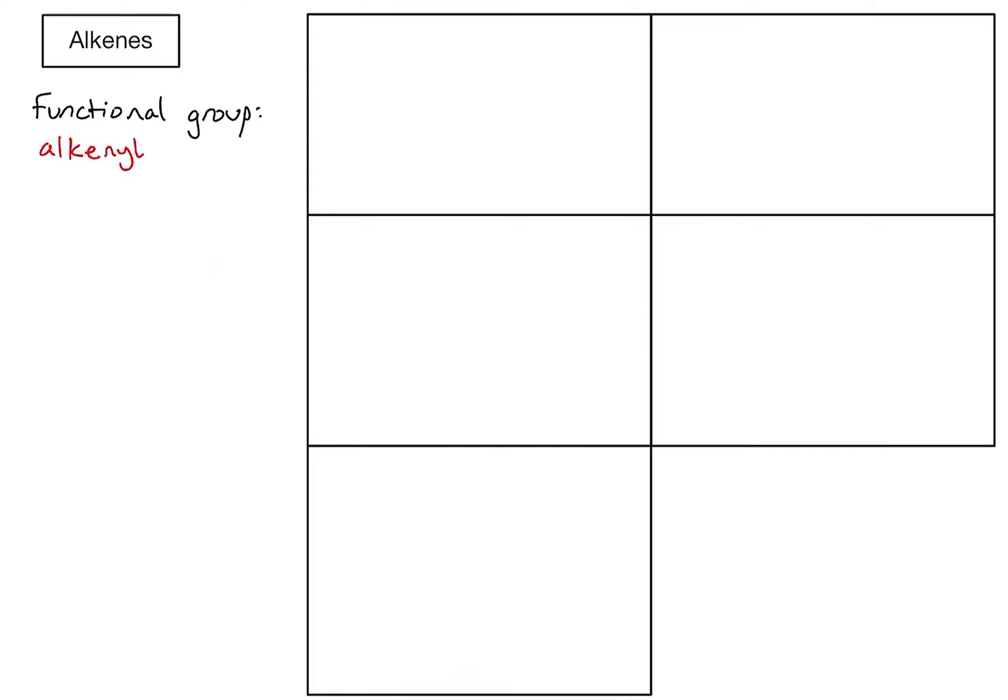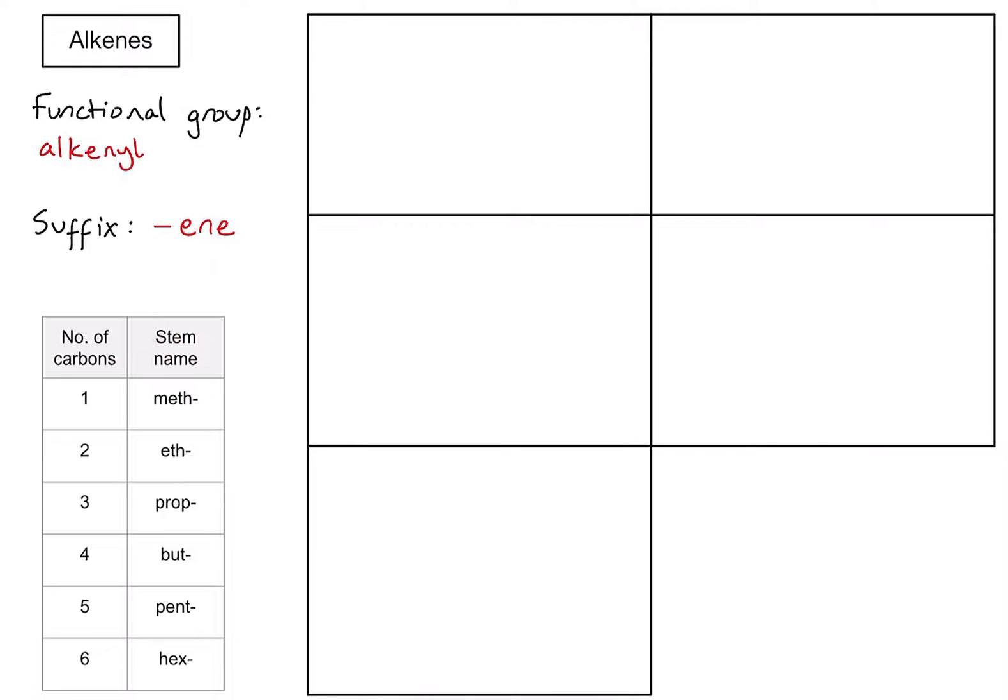And how do we name these? Well, the key thing to know here is that the end of the name of alkenes is going to be "-ene". Suffix just means the end part of the name. And for reference, let's include how we find out the stem name in our alkenes related to the number of carbons in the main chain, which gives us the central part of the name of that molecule.